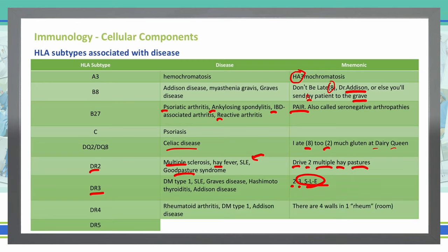HLA-DR4 is associated with rheumatoid arthritis, type 1 diabetes, and Addison's disease. The mnemonic here is 'there are four walls in one ROOM' — using the spelling R-O-O-M — so rheumatoid arthritis with DR4.